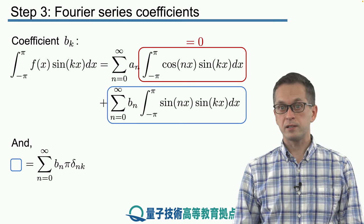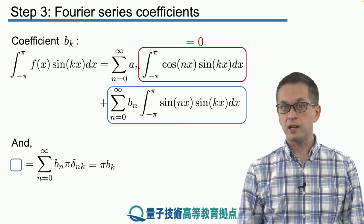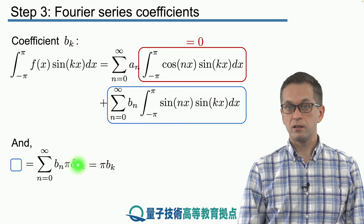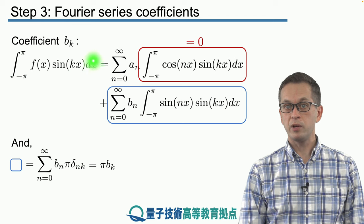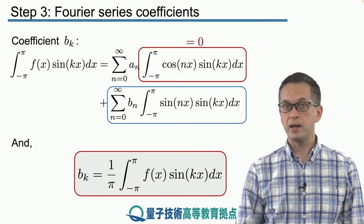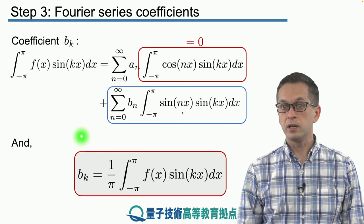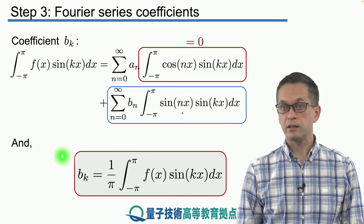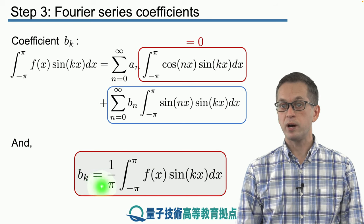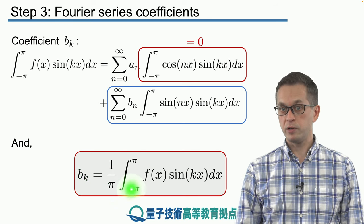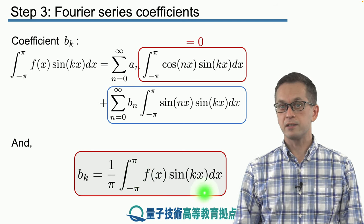So the sum itself is equal to pi times b_k. And again, we can just take this guy right here. We know it's equal to our original integral up here. We divide both sides by pi, and we arrive at our formula for the weights for the sine basis functions. So b_k is equal to 1 over pi times the integral over a period, which is minus pi to pi, f(x) times sin(kx) dx.